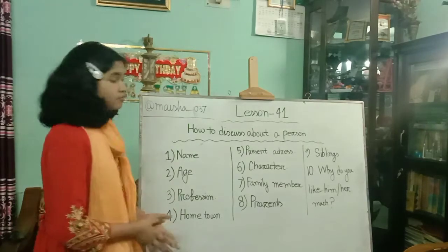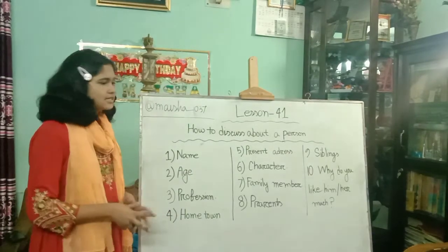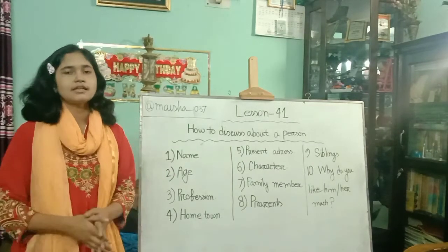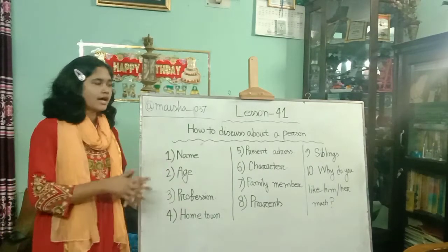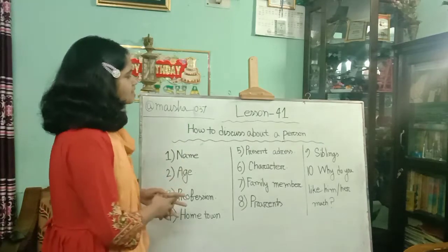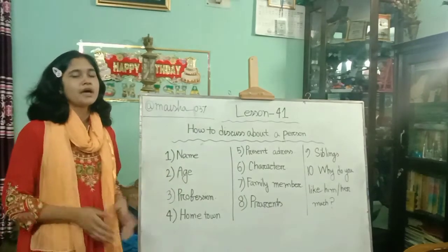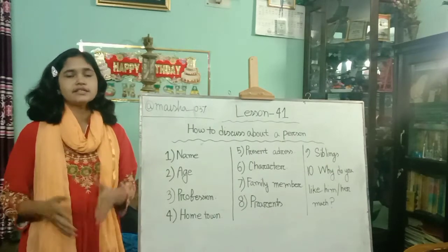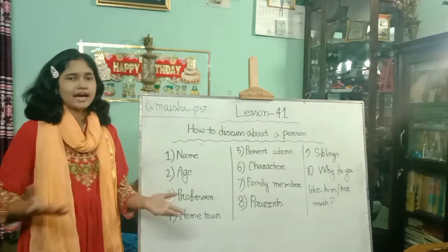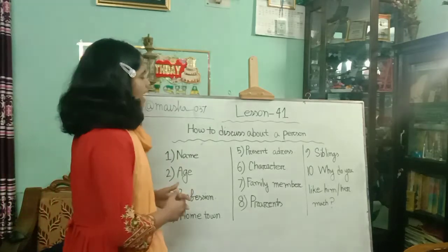And then hometown — you can say like 'Her hometown is in ____,' for example Chakpur or Bolbuna, as you wish. And then present address — you can add like 'My friend's present address is in Chakpur, Bolbuna, Kulna, Dhaka,' as you wish. You can add the address name here.